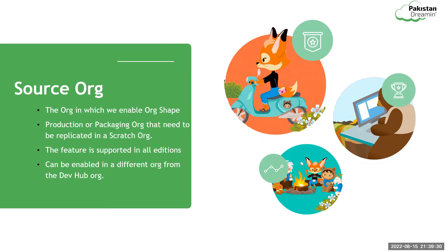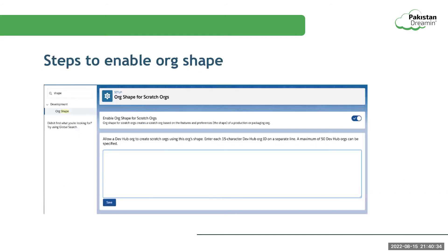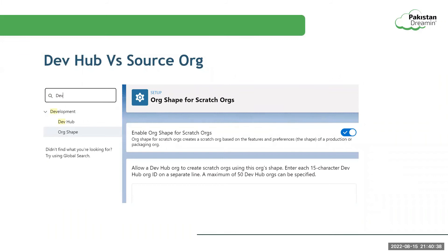You can also note that your org can be a Dev Hub and a source org at the same time. To clarify — assume you have two orgs, Org1 and Org2. In Org1 you have enabled the Dev Hub option and can create scratch orgs using Org1. If you want to create scratch orgs using Org2's metadata, you need to enter the 15-digit Dev Hub org ID under the 'Allow a Dev Hub org to create scratch orgs using this org shape' option in the org shape. Enter each 15-character Dev Hub org ID on a separate line; a maximum of 50 Dev Hub orgs can be specified. This way, using a Dev Hub org and a source org, you will be able to create scratch orgs that hold the feature licenses and settings you need.